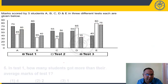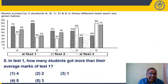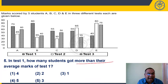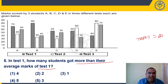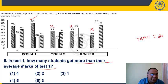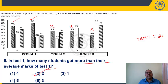Question 5: In test one, how many students got more than the average marks? We already calculated the average for test one is 60. Looking at test one bars: students scoring more than 60 are A (70) and B (80) — that's 2 students. Answer: 2 students.